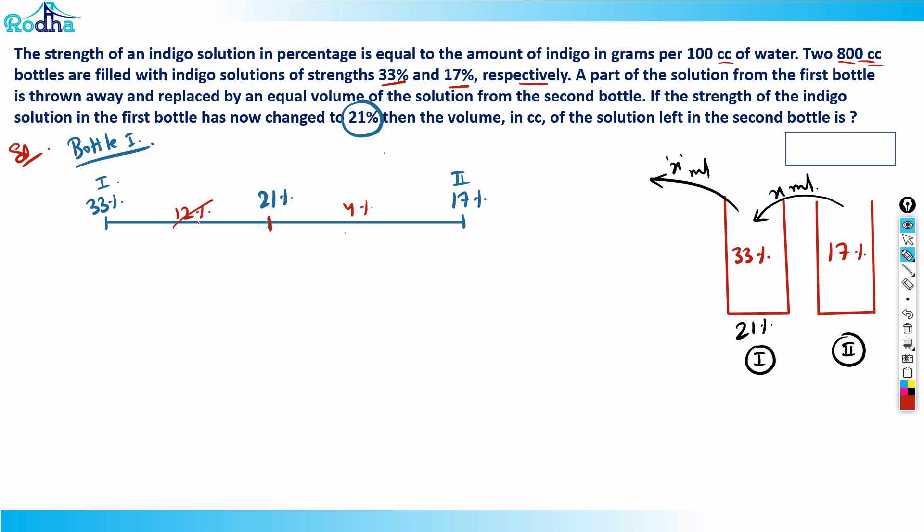The ratio is 3 is to 1. That basically means the actual weight ratio would be 1 is to 3 because weight is inversely proportional to distance - you can see this explained in my Rosa allegation video. In bottle one, the original solution that was 33% strength is only one part and the solution which is added is three parts.